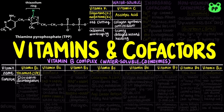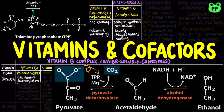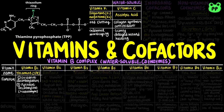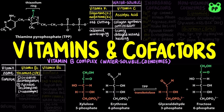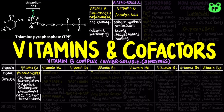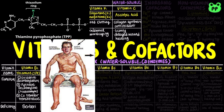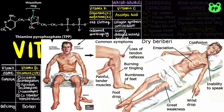Vitamin B1 also transfers aldehyde groups in anaerobic decarboxylation catalyzed by the yeast enzyme pyruvate decarboxylase, the first step in alcoholic fermentation. Lastly, TPP facilitates two-carbon transfer during the transketolase reaction, which is part of the pentose phosphate pathway and the Calvin cycle. Vitamin B1 deficiency causes beriberi: wet beriberi affects the cardiovascular system leading to heart failure, whereas dry beriberi affects the nervous system leading to muscle paralysis.